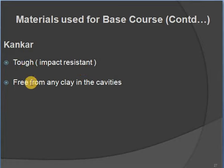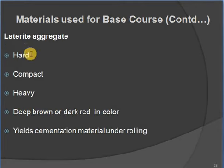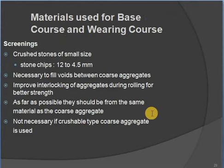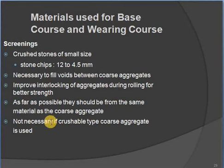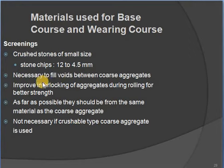Kankar is tactile, impact-resistant, and free from clay in cavities. Laterite aggregate should be hard, compact, heavy, deep brown or dark resin in color, and yields cementation material on rolling. Screenings are fresh stones of small size — stone chips 12 to 4.5 mm — necessary to fill voids between coarse aggregates and improve interlocking during rolling for better strength.